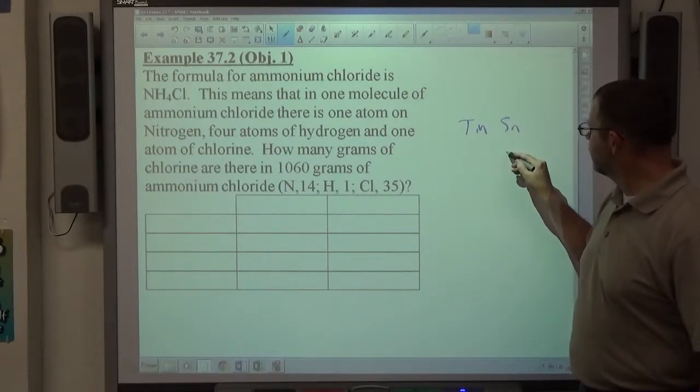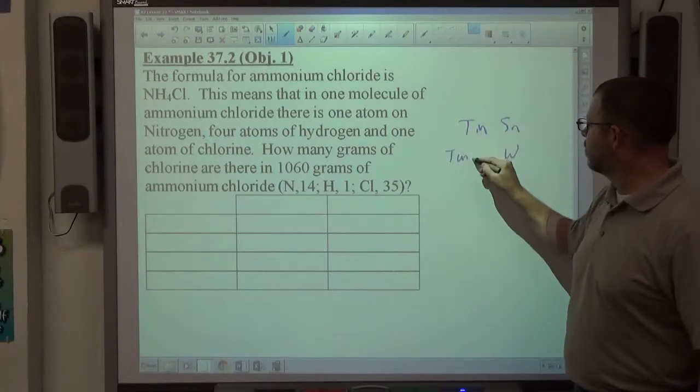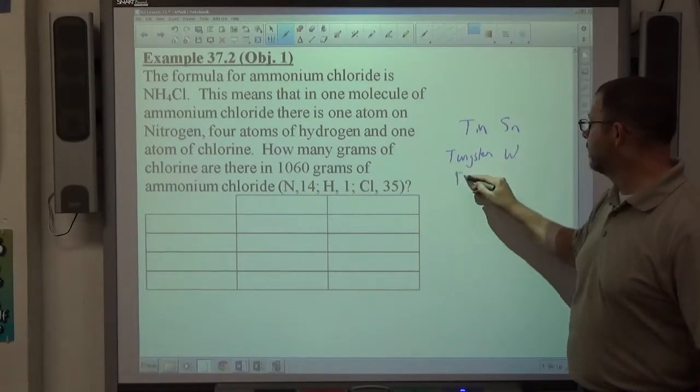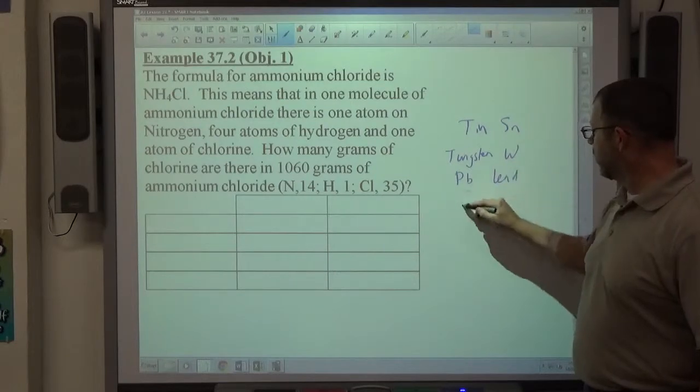W is tungsten. That's weird. PB is lead. Gold is AU.